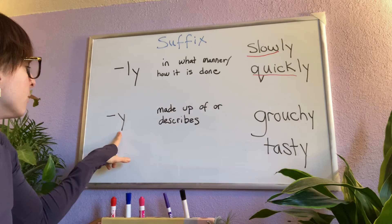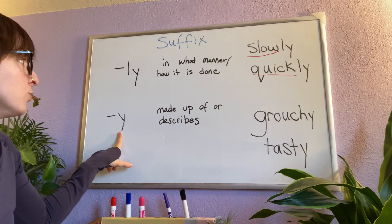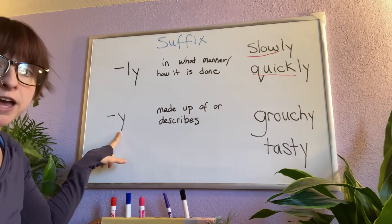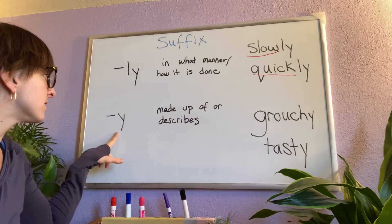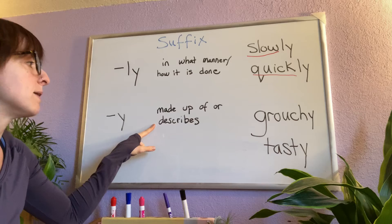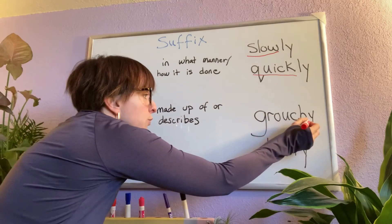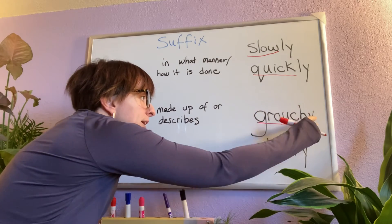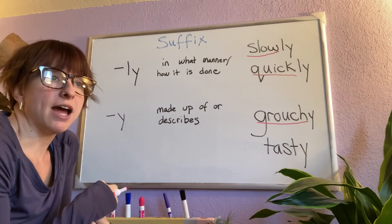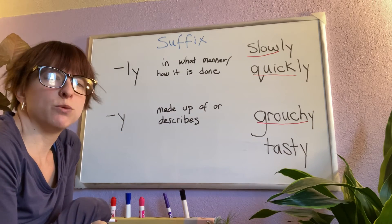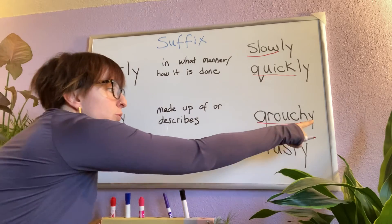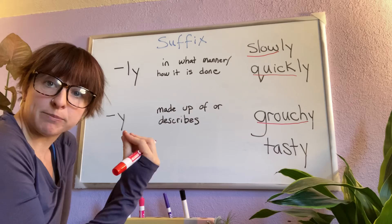We have -y added to a root word, and this is typically done with adjectives. This suffix says it's made up of or describes something. Here's the word grouch — if you put a -y on it, now I can describe something. I can say the dog was grouchy and it growled. The -y now describes the dog.